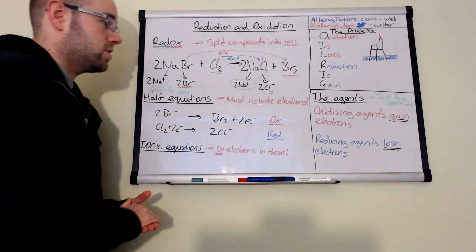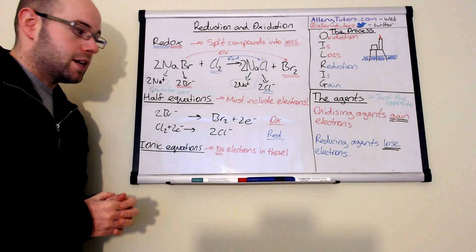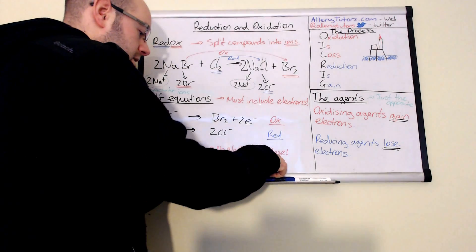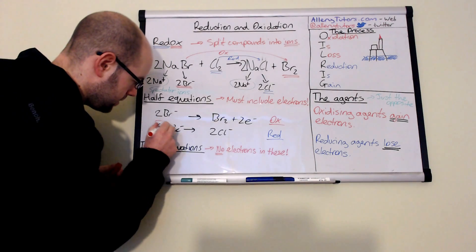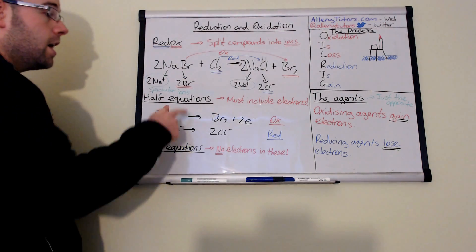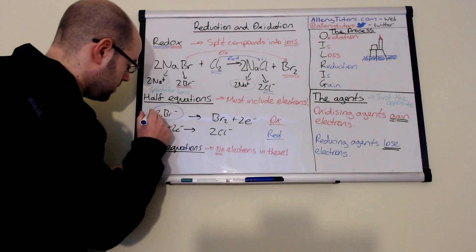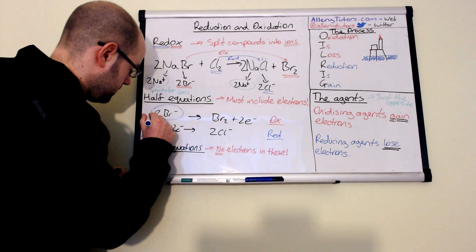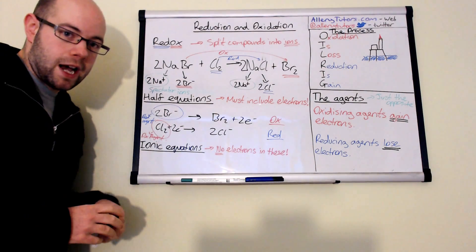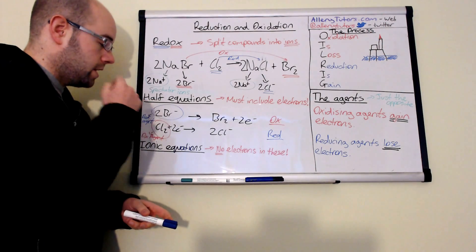In terms of the agents: an oxidizing agent is something that gains electrons. Looking at these reactions, the only species gaining electrons is chlorine, so chlorine is our oxidizing agent. Our Br- is losing electrons, so Br- is our reducing agent. We've now identified our oxidizing and reducing agents. Note it would be opposite if the reaction went right to left, but this reaction goes left to right.